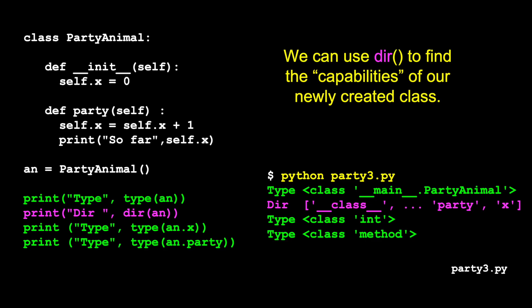Now if we do the same thing to code that we've built, or a class that we've built. So now we have a party animal class. Remember this up to here is just definition. Now we construct it and we store it in an. So an is a variable that contains an object of type party animal.